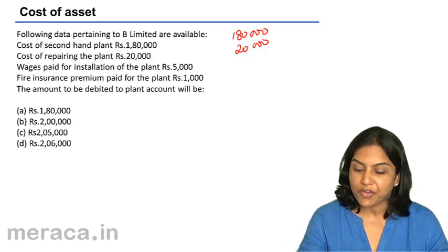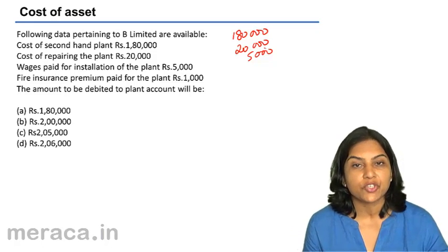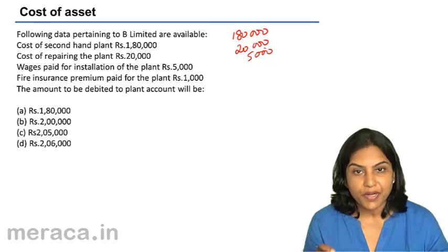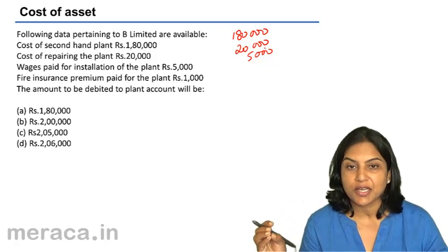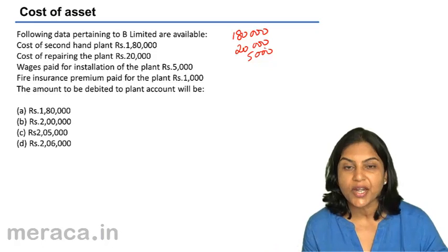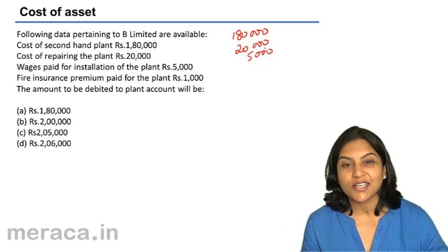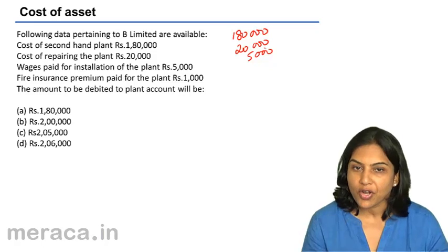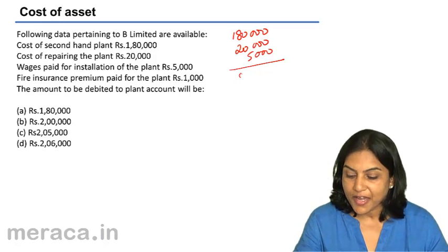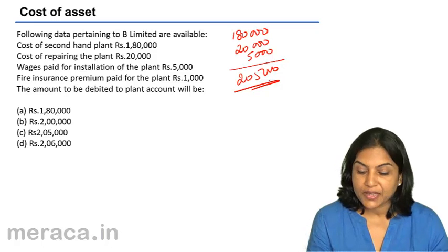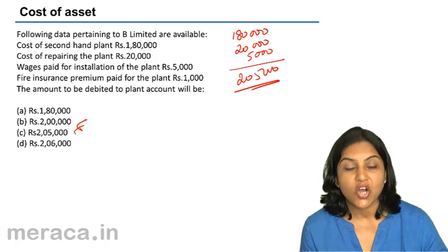So we have 1,80,000 (cost of secondhand plant) plus 20,000 (cost of repairing) plus 5,000 (wages paid for installation — without installation we cannot use the plant). Fire insurance premium of 1,000 is paid for maintaining the plant; if there is a fire and the machine is destroyed, I want it replaced. This cost is incurred to maintain the machine and is not part of the cost of the machine. Therefore, the total is 1,80,000 plus 20,000 plus 5,000 = 2,05,000. The answer is C: 2,05,000.